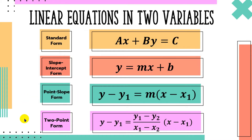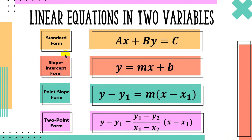Today, we're going to discover another form of linear equation: the point-slope form and the two-point form. In point-slope form, the equation is y minus y-sub-1 equals m times the quantity x minus x-sub-1, where m is the slope. In two-point form, it's almost the same, but two points are given. The slope m uses the formula: the difference in y over the difference in x. So the full two-point form is y minus y-sub-1 equals (y-sub-2 minus y-sub-1) over (x-sub-2 minus x-sub-1), multiplied by the quantity x minus x-sub-1. The resulting equations from point-slope and two-point forms are still slope-intercept form or standard form.